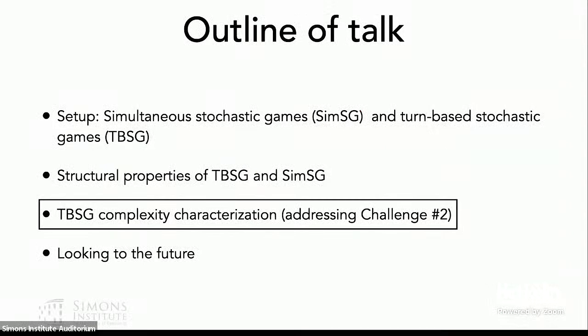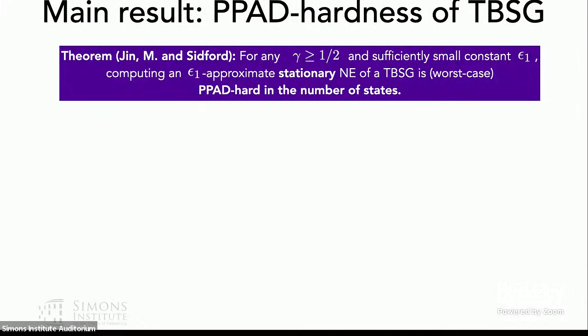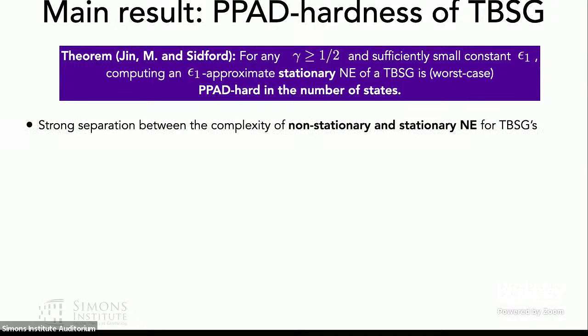Now we address the final remaining question: whether TBSGs are polynomial time or PPAD hard. Unfortunately, we end up showing that TBSGs are in fact intractable. Despite all the nice structure, the problem remains hard. More formally, for any discount factor sufficiently large — greater than one half — and a sufficiently small constant ε, computing approximate Nash equilibrium turns out to be worst-case hard in the number of states. This implies a fundamental separation between the complexity of non-stationary and stationary Nash equilibrium: non-stationary equilibria are polynomial time, but stationary ones are intractable.